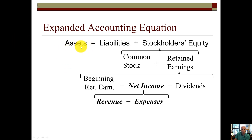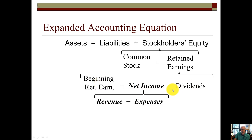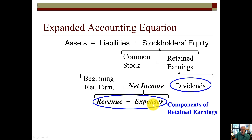Let's look at the expanded accounting equation. We know that stockholders' equity can be broken down into two buckets: common stock and retained earnings. Common stock is the external value, and retained earnings is the internal value. We can further break down retained earnings into the beginning balance of retained earnings, plus net income, minus dividends. And we can further break net income down to revenues minus expenses, which are reported on the income statement. These three things — revenues, expenses, and dividends, the TREAD — get reduced to zero. These are the components of retained earnings.